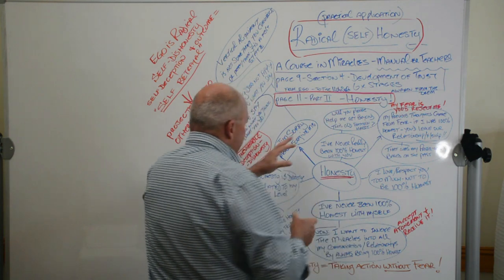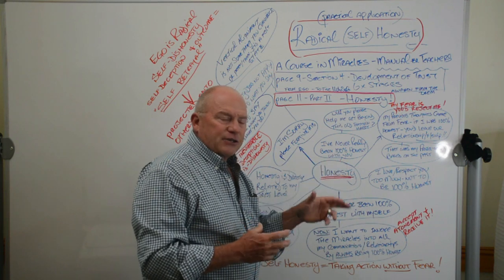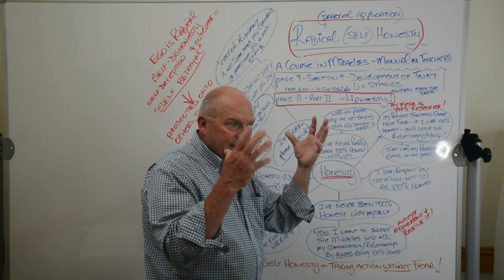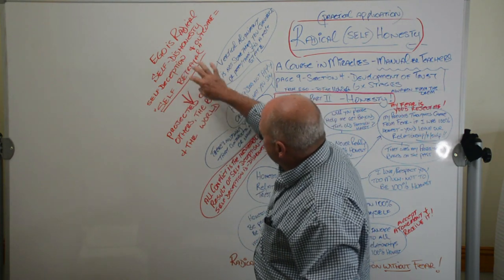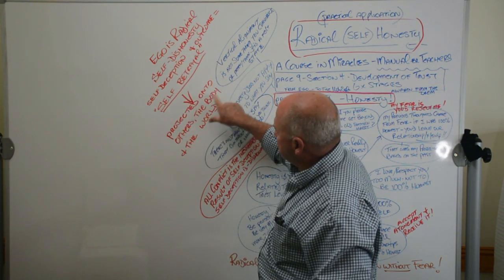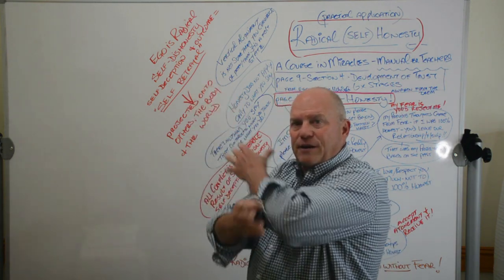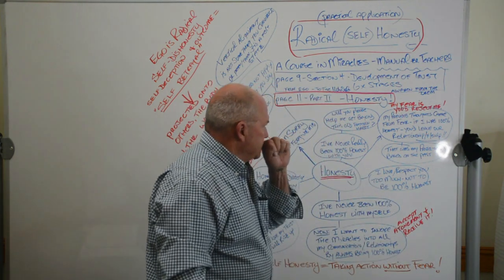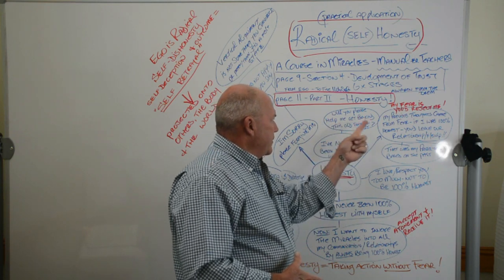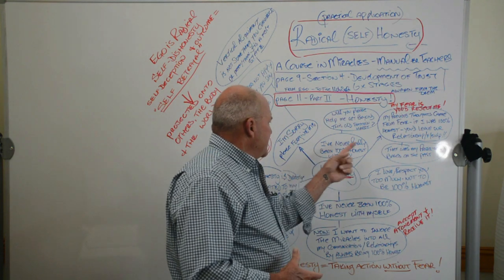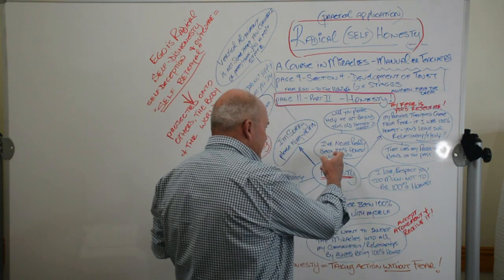How about this one? Ego is radical self-dishonesty. Ego is radical self-dishonesty. Self-deception is the outcome of self-betrayal. Ego is radical self-dishonesty. Self-deception, and the outcome from that is self-betrayal. How's that? So this whole thing around, you know, come back to here about, I've never really been 100% honest with myself. How do we know that? Because in the past we were in ego land. We're in ego-ville. The whole thing was just ego, ego, ego. So we're all operating up here in all of this. And the outcome of that is that's projected out onto others and to the body and onto the world. That whole self-betrayal, self-deception.